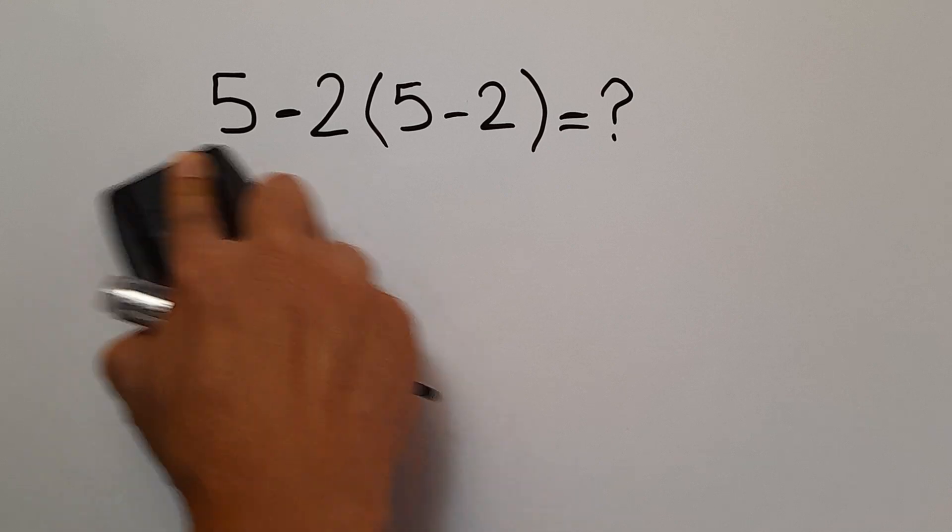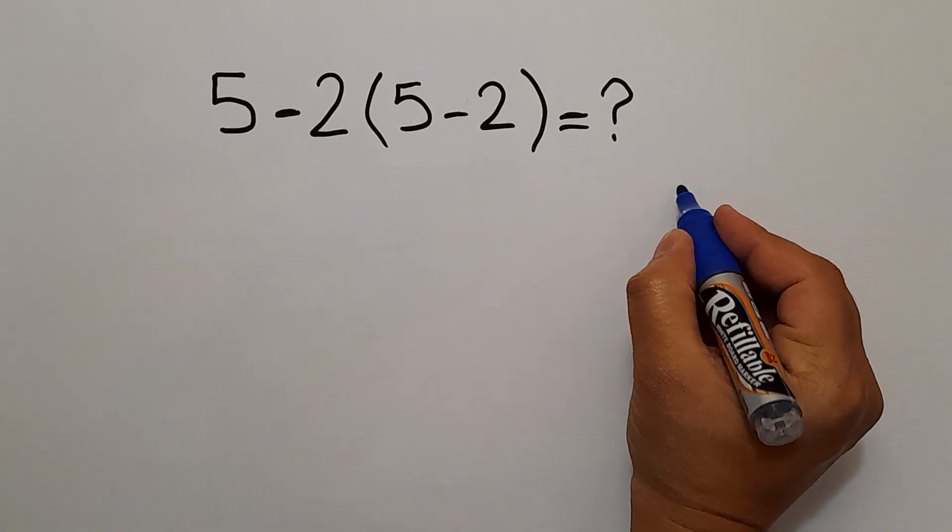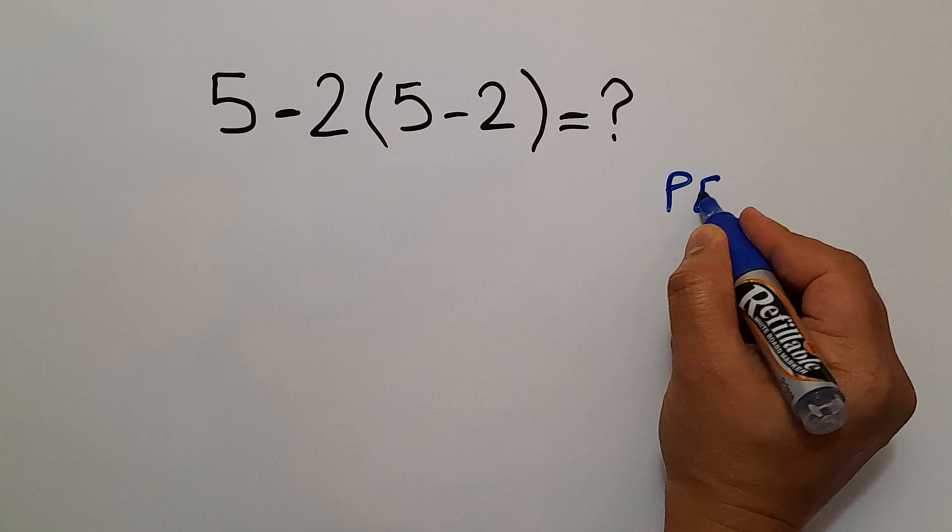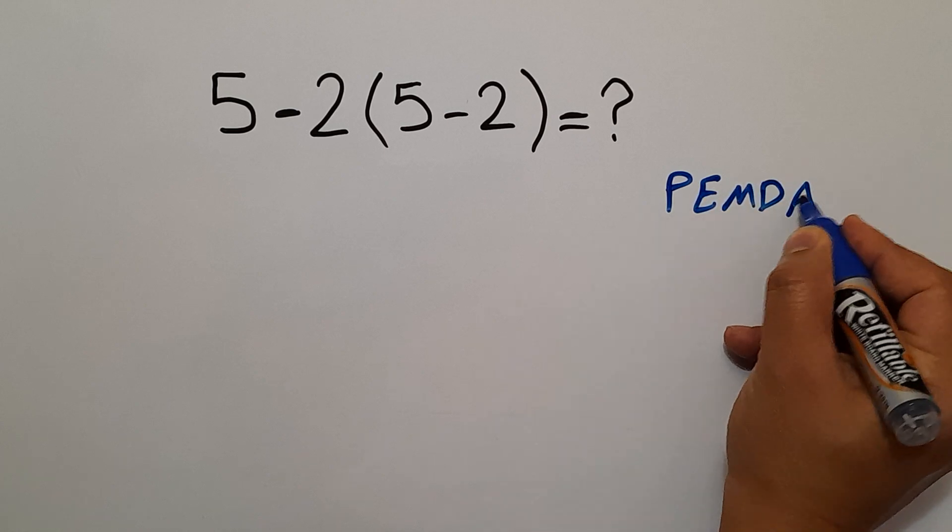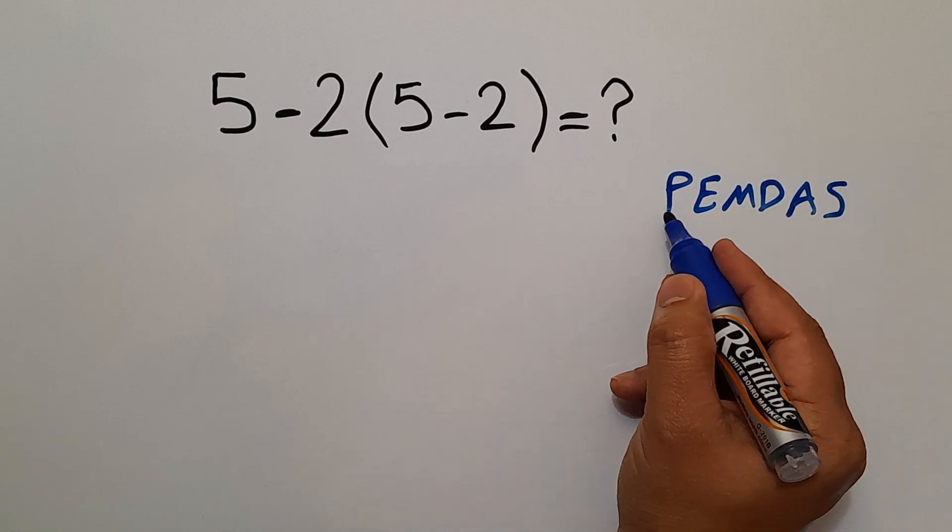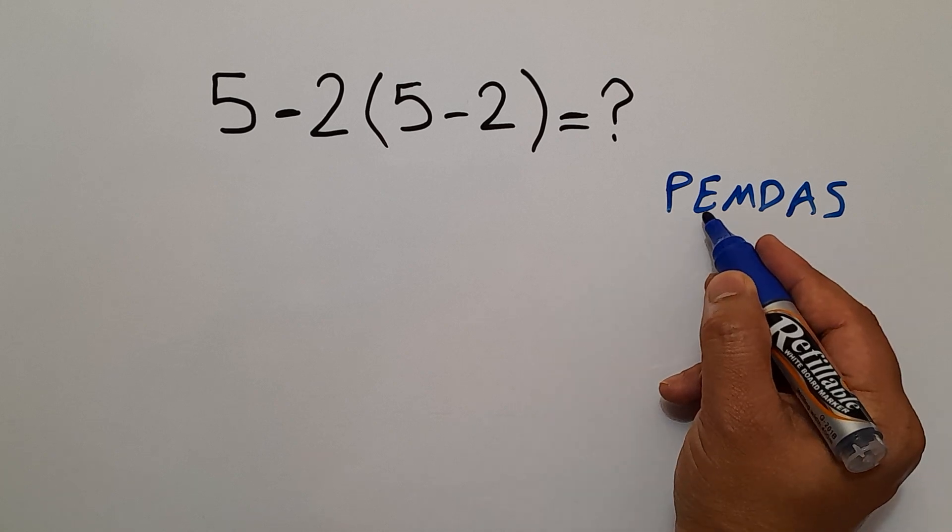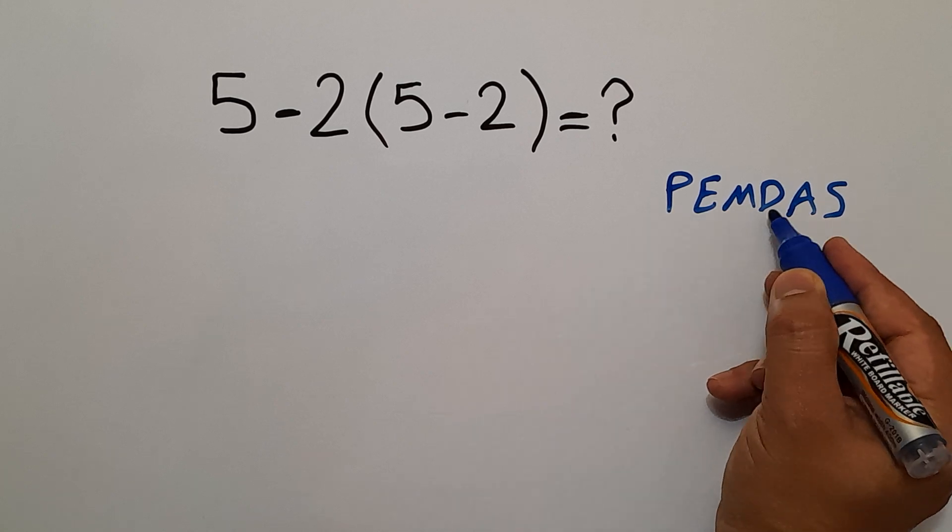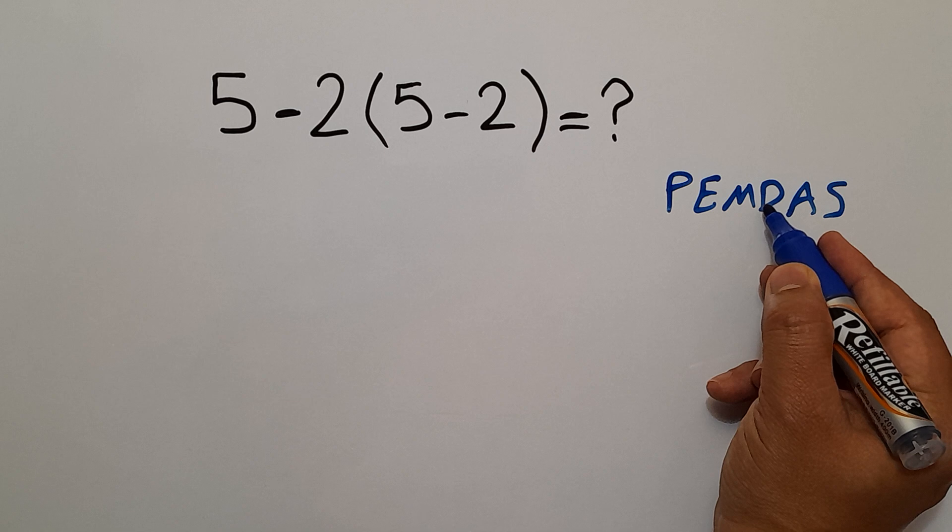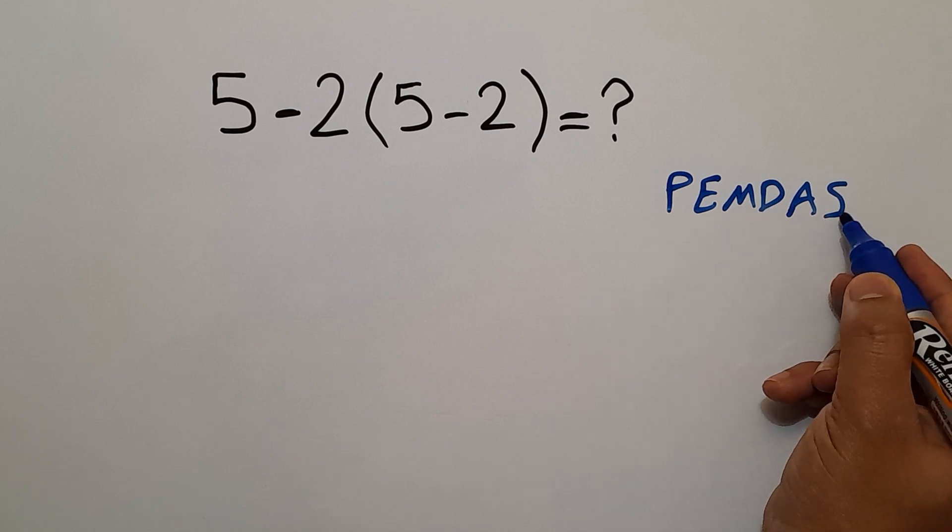Because according to the order of operations, which is PEMDAS: P stands for parentheses, E stands for exponents, M and D stands for multiplication and division, and A and S stands for addition and subtraction.